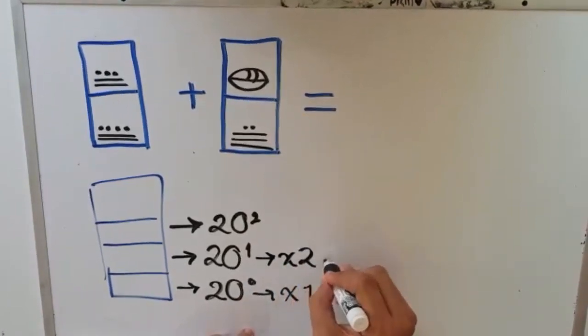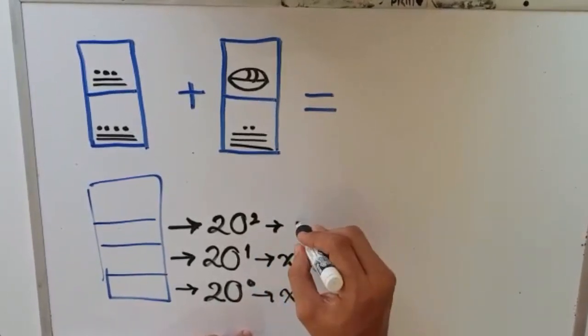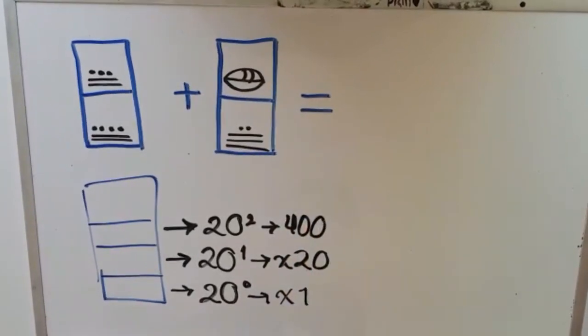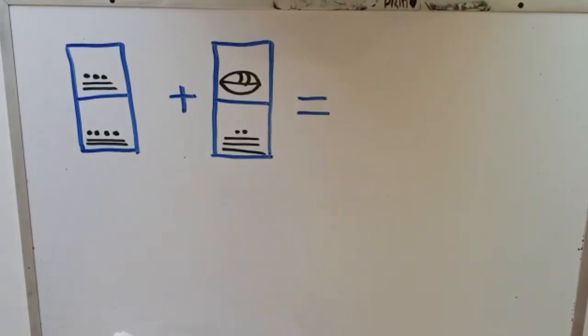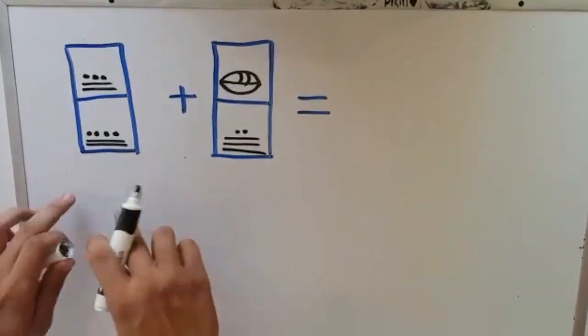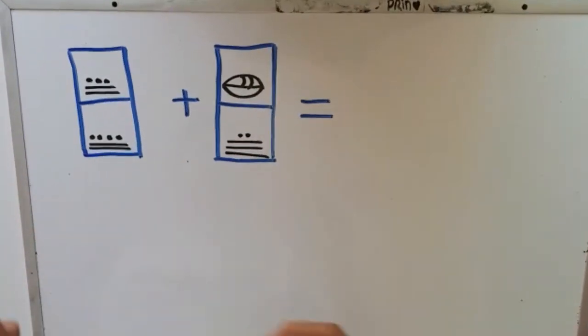The third level is multiplied by 400, and so on. So here we write the first and the second level.